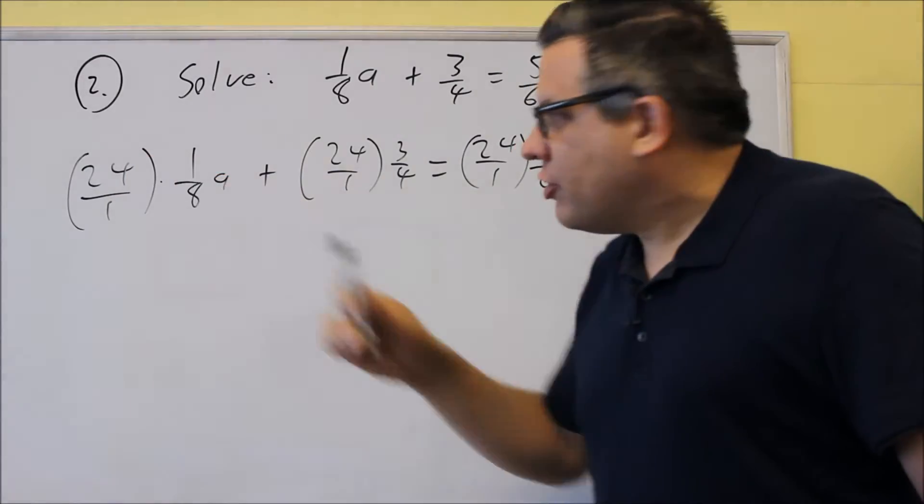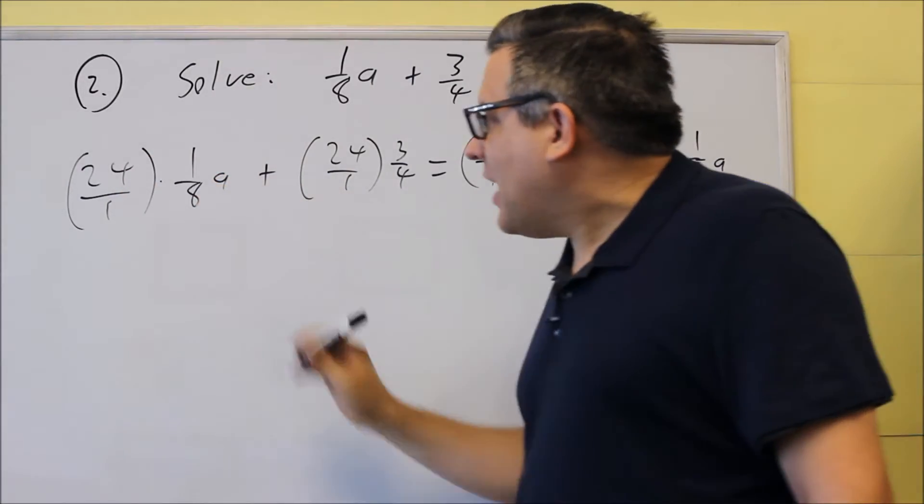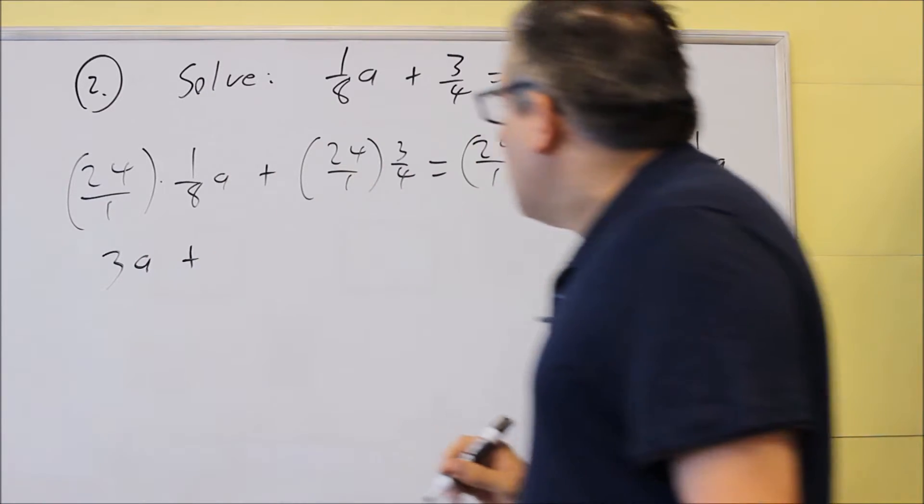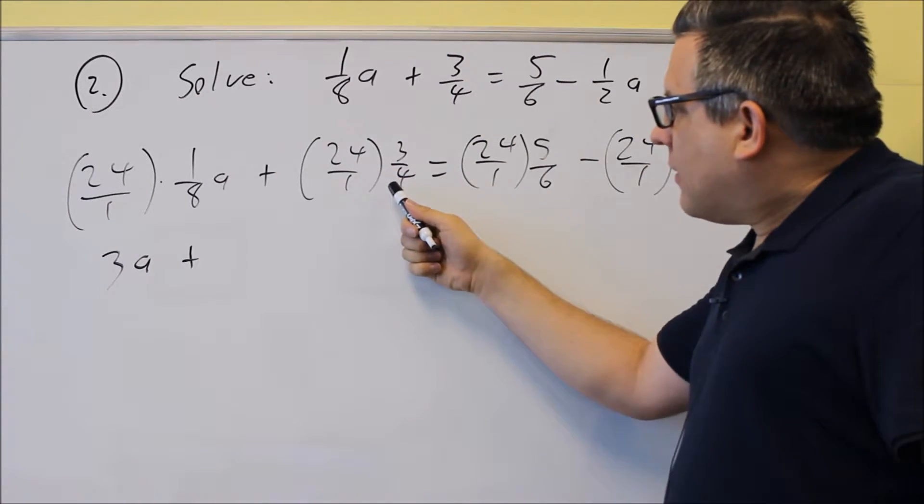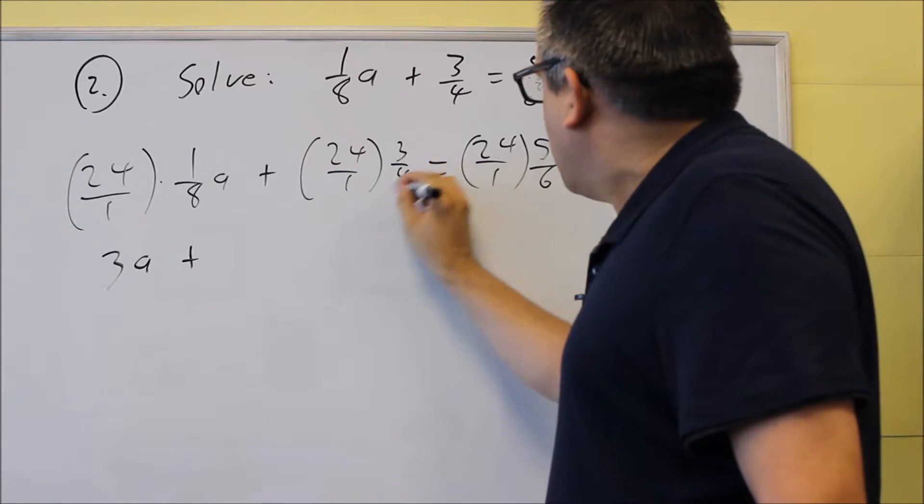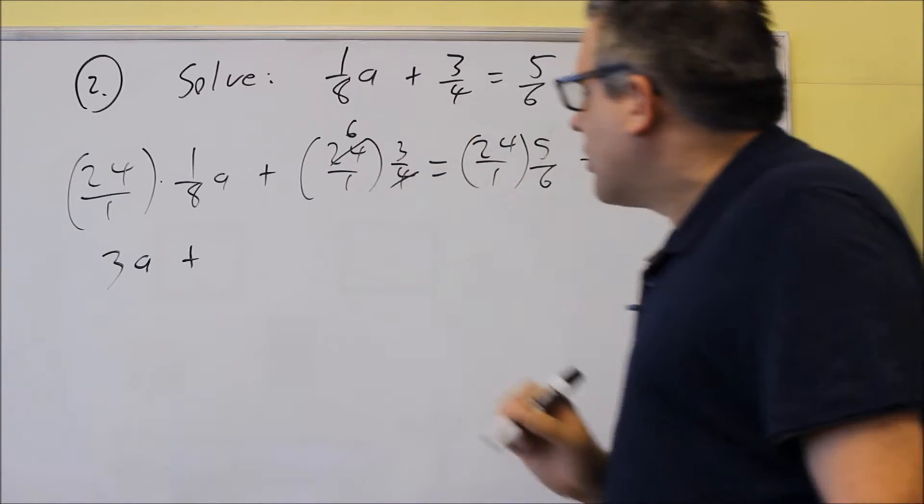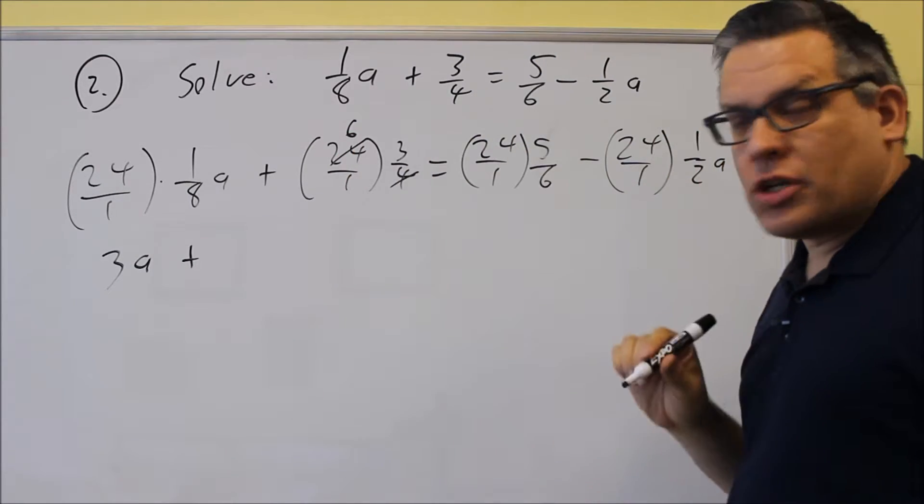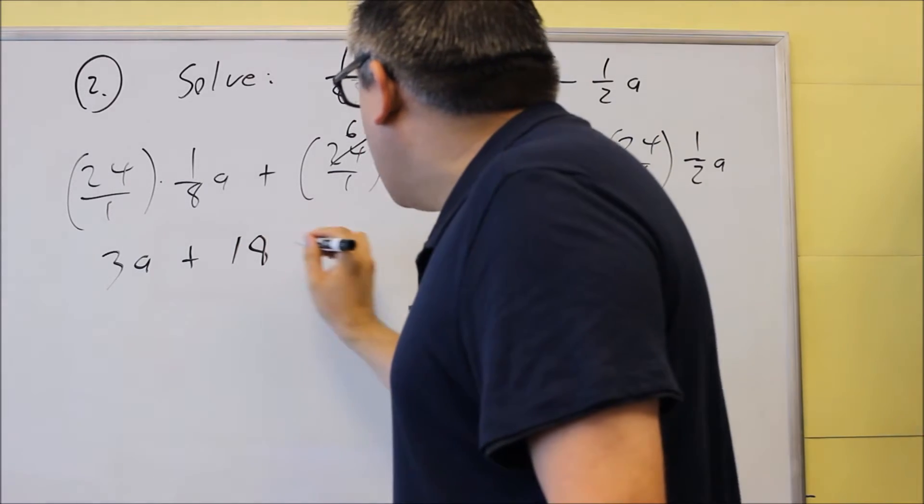Now we're going to reduce. So twenty-four divided by eight is three a. And then for this one here, we can cross-reduce. So four goes into twenty-four six times, and I have six times three, so that's going to be eighteen.